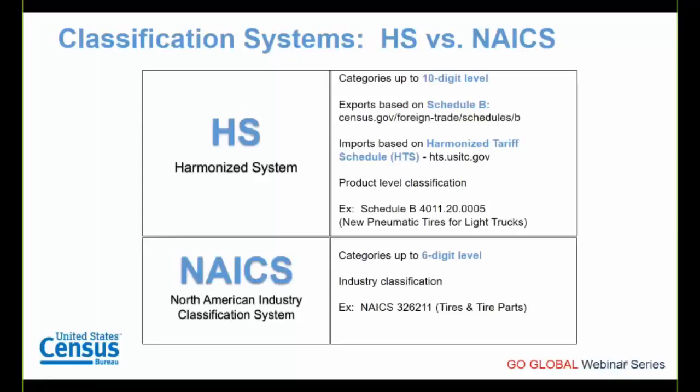USA Trade Online offers data in two classification systems: the Harmonized System (HS) and the North American Industry Classification System (NAICS). HS data shares the same six-digit headings for imports and exports, with differences in the final four digits of their ten-digit codes — exports use Schedule B classification, imports use the Harmonized Tariff System. NAICS data is product-based but provides a broader picture. For example, at the six-digit NAICS level you might see passenger vehicles or potatoes, while under HS you could distinguish trucks from light automobiles, or organic from russet or red potatoes.